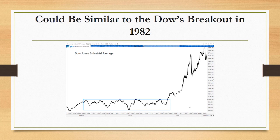Here's a similar breakout that we saw in 1982 — the Dow in this case was finally breaking above the high reached in 1966. So in that case we had a 16-year trading range, similar to the time frame and period that we've just seen in the Value Line Geometric.